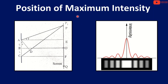Next is the position of maximum intensity. The maximum intensity is at the center. All light rays arrive in phase, so the path difference is zero. Since the path difference is zero, the light waves interfere constructively. This point is called the central maxima or principal maxima.